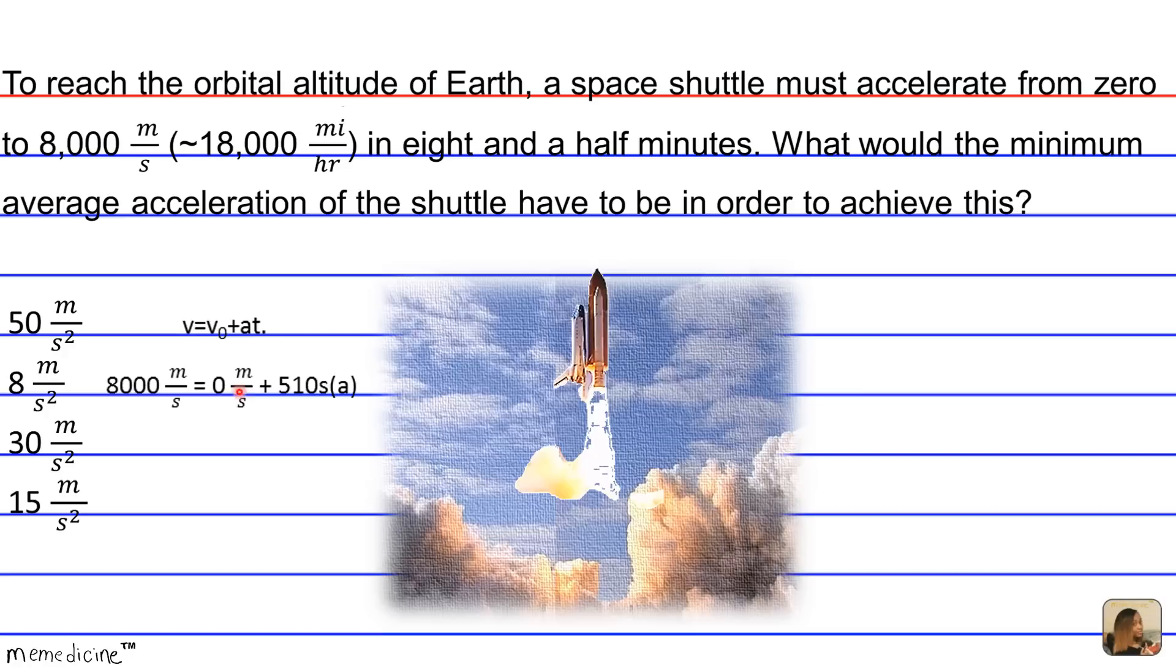The actual answer would have to be 15.69. I'm not sure who made this question, but they rounded down instead of up. This 15 probably should be a 16, but this is the closest answer, so that's the answer we're going to go with. The correct answer choice is D, 15 meters per second squared.